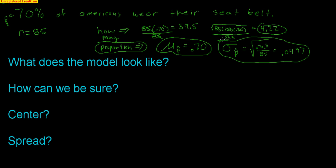All of this is going to start to make sense. 70% of people wear their seatbelt, I'm looking at a sample of 85. I want to model this situation — what can happen when you interview 85 people and ask what proportion wear their seatbelt. The model looks like the normal model. There are three conditions that allow the normal model to be used. The first is that the sample must be random.